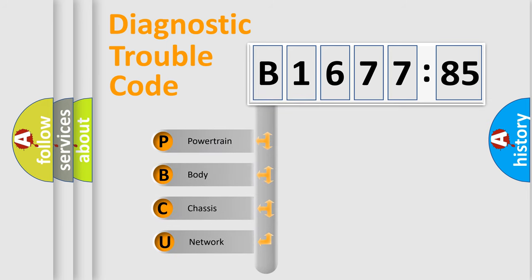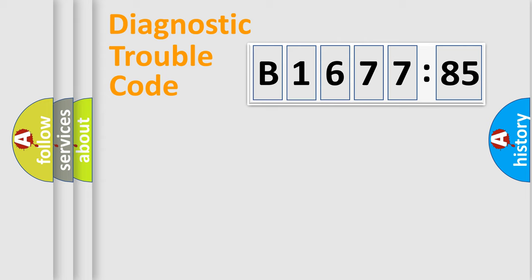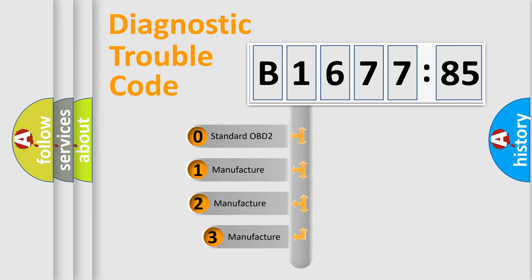First, let's look at the history of diagnostic fault code composition according to the OBD2 protocol, which is unified for all automakers since 2000. We divide the electric system of automobile into four basic units: Powertrain, body, chassis, network.